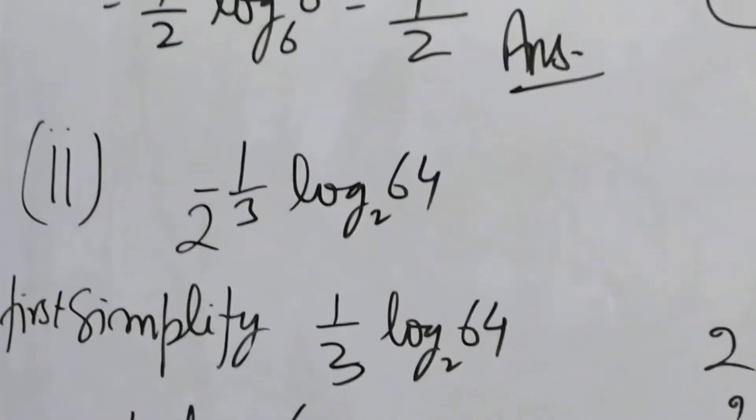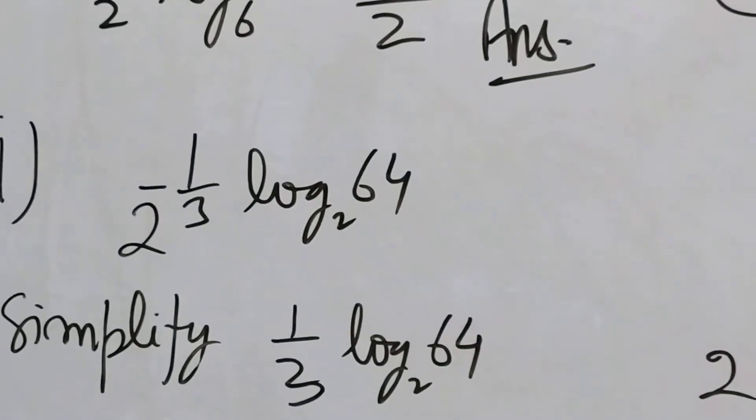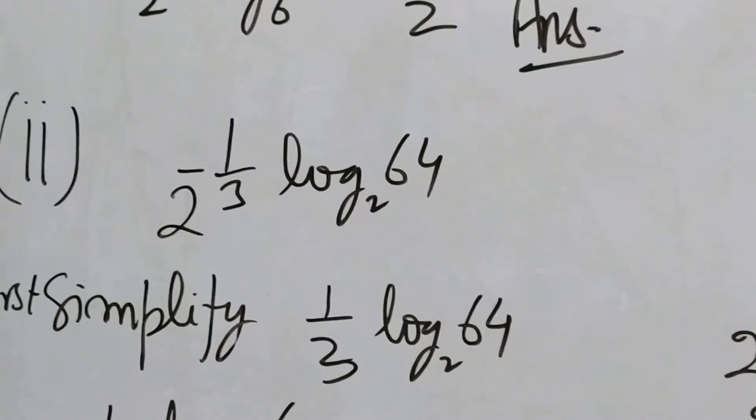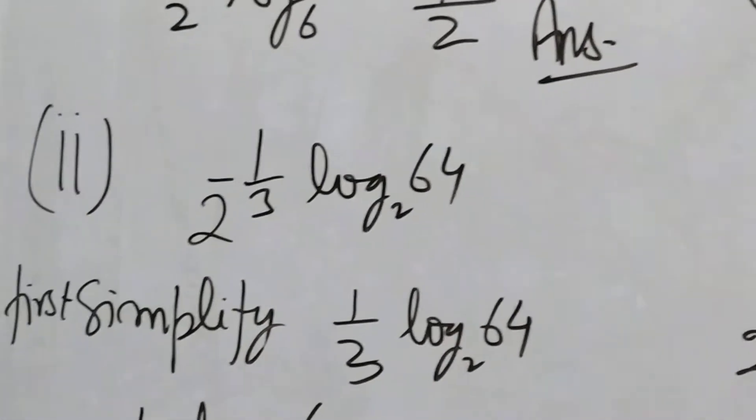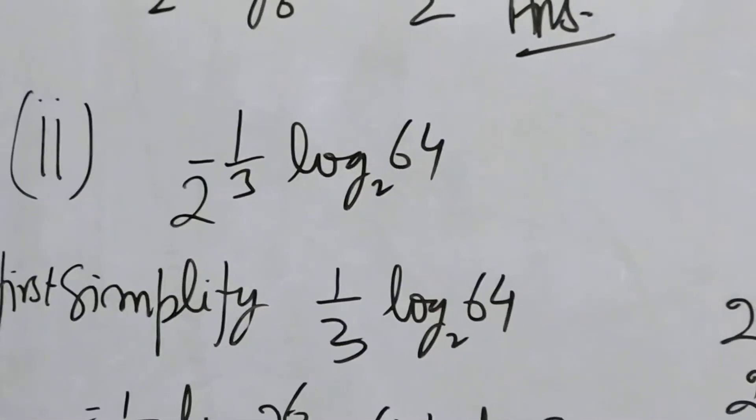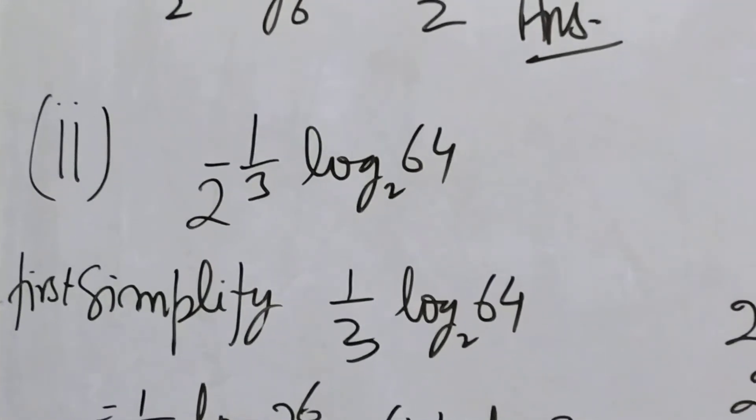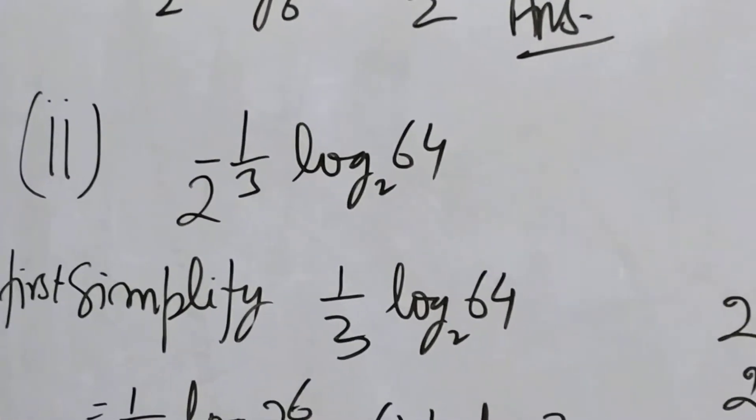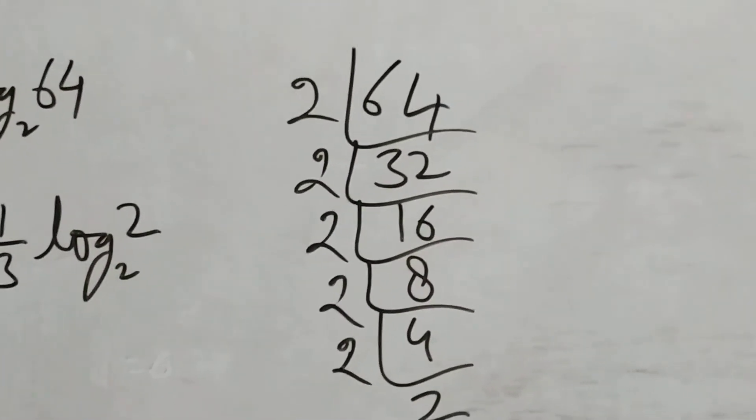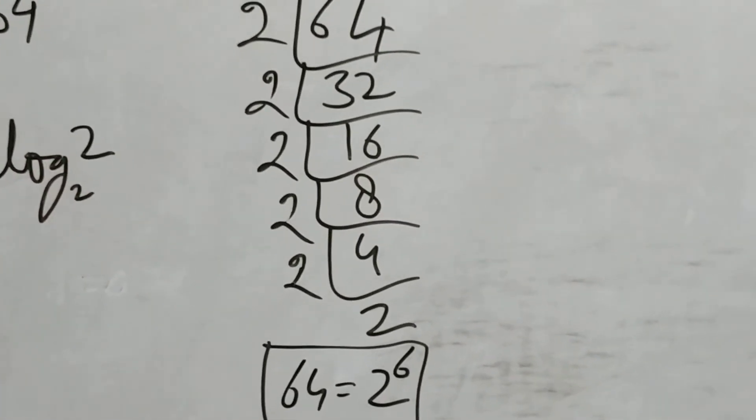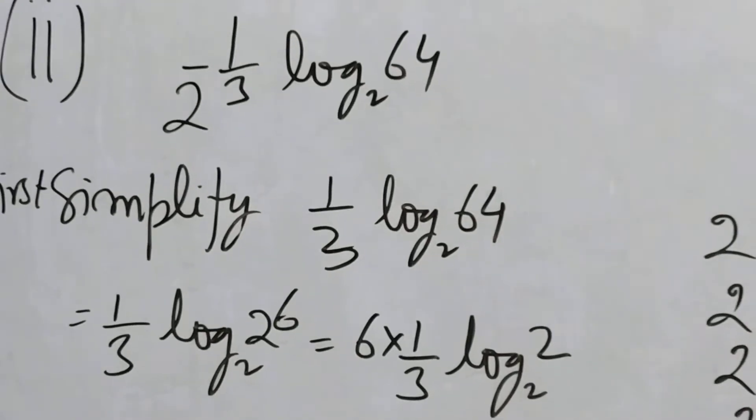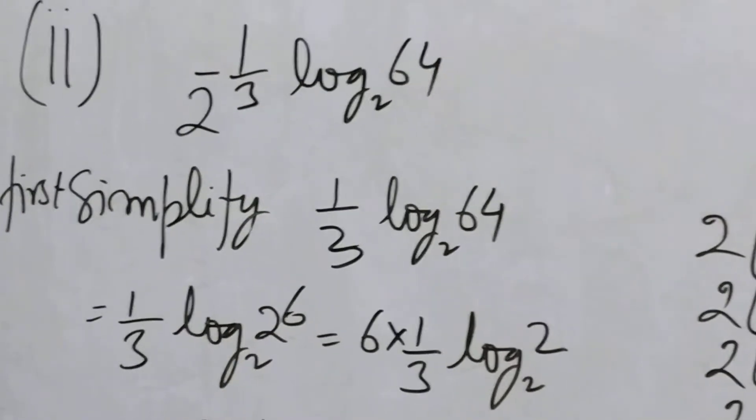Now second question. Simplify 1 by 3 log of 64 to the base 2. 64 can be written as 2 to the power 6. So in place of 64 write 2 to the power 6.